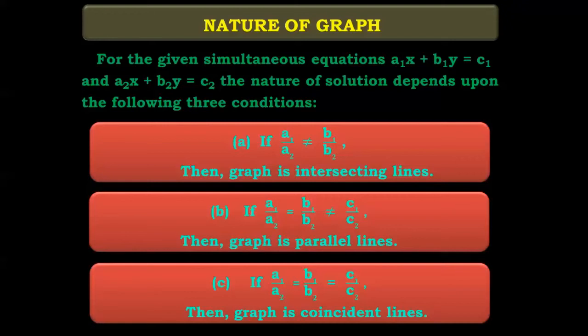Remember: a1/a2 not equal to b1/b2 means the graph is intersecting lines. If a1/a2 equals b1/b2 but not equal to c1/c2, the graph is parallel lines. And if a1/a2 equals b1/b2 equals c1/c2, the graph is coincident lines, that is overlapping lines.